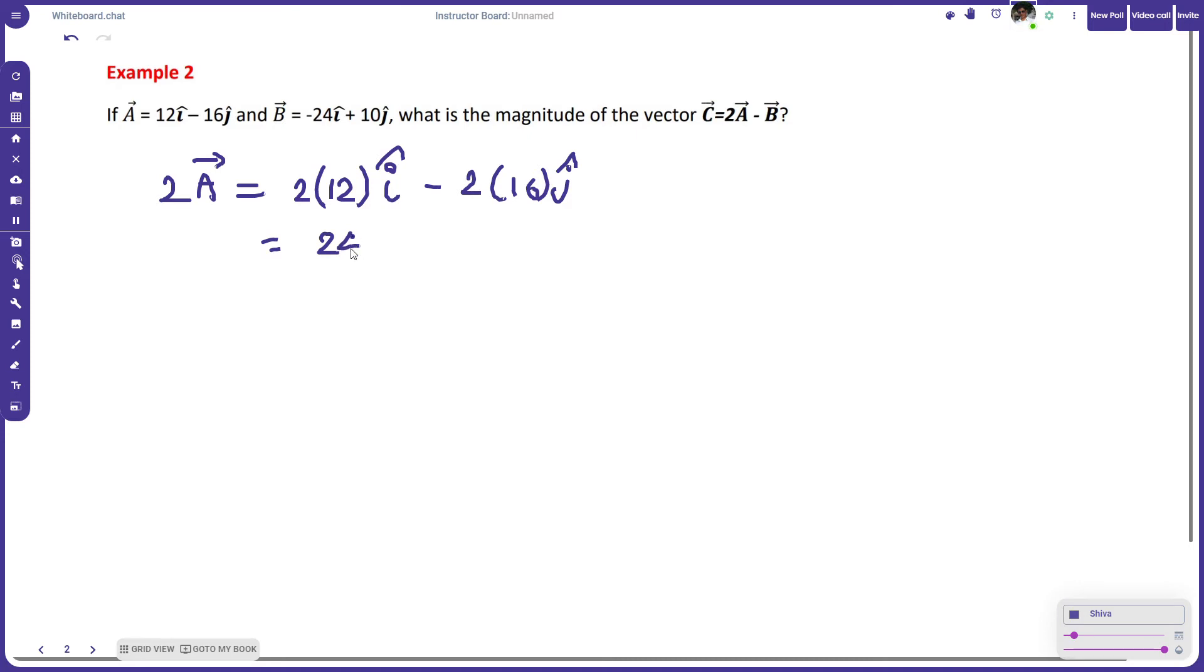We get 24i cap minus 32j cap. So that's it for vector multiplication with a scalar. Now we need minus b.